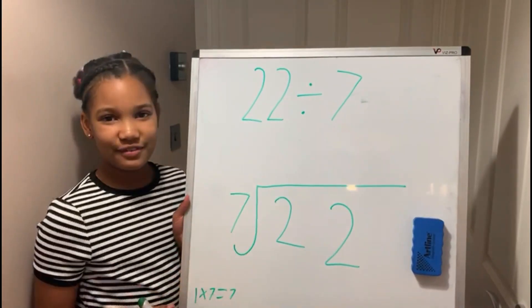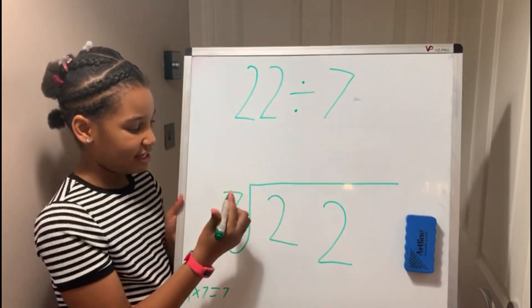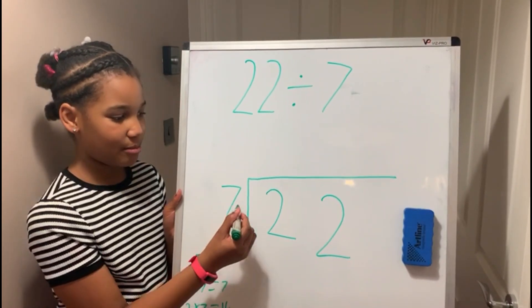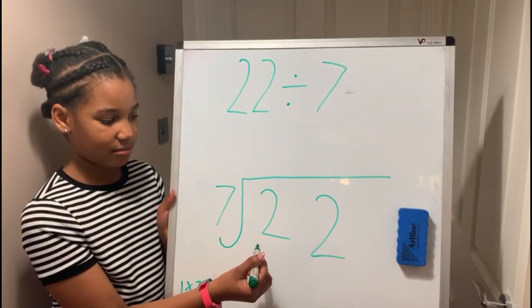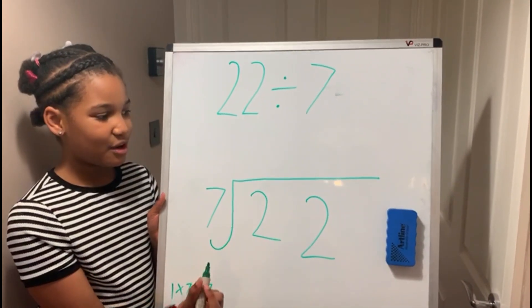Here's an example of division with remainders: 22 divided by 7. I've already written it out for you here. 7 outside the bus stop and 22 inside the bus stop. Now how many 7's go into 2? We know you can't do that.